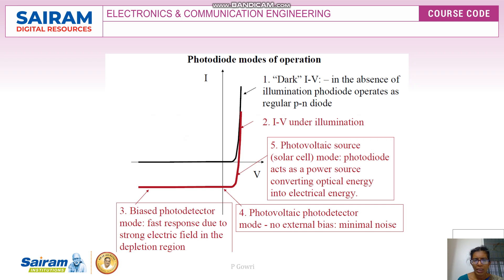The current without photons is called the dark current, and the current under illumination is called the illuminated current, represented as the IV characteristic under illumination. We will be studying solar cells, LEDs, and photodiodes in detail in the forthcoming videos.